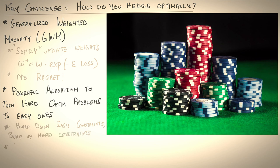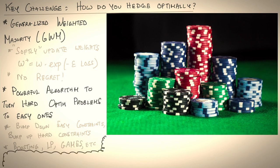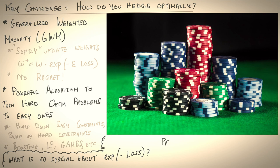As we end the lecture, one lingering question remains: what is so special about the form exp(−loss)? Why does it show up over and over again in imitation learning, decision-making, and so on? The answer is there is indeed a deep connection between this expression and the principle of maximum entropy — a fundamental way for learning distributions. Hopefully this will be a topic we'll explore in an upcoming lecture. Until then, take care.